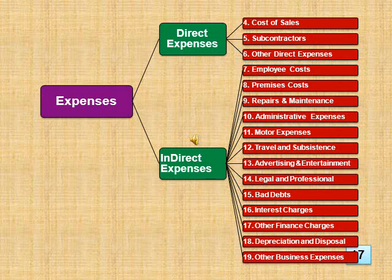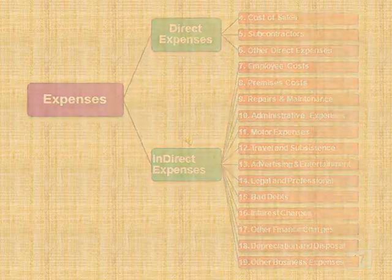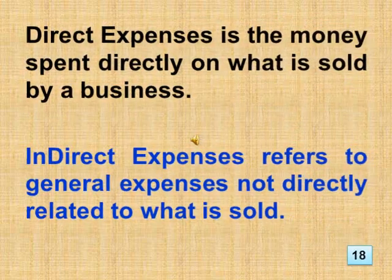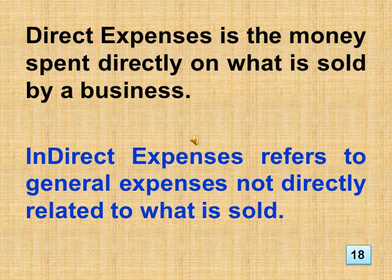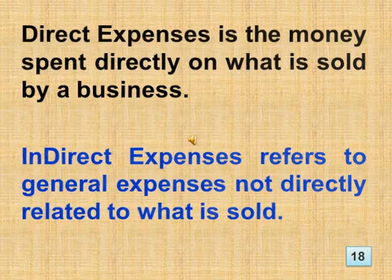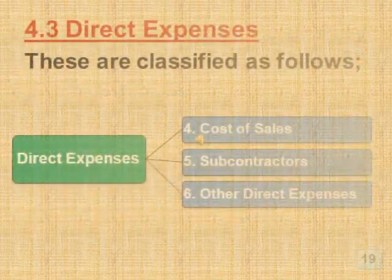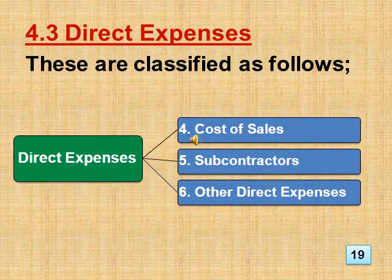Direct expenses is the money spent directly on what is sold by a business. Indirect expenses refers to general expenses not directly related to what is sold. Direct expenses are classified into cost of sales, sub-contractors, and other direct expenses.